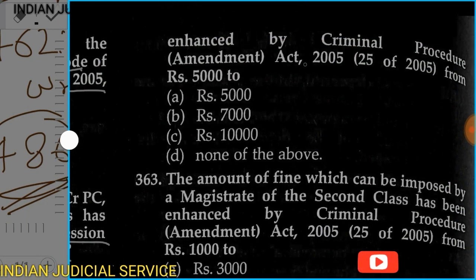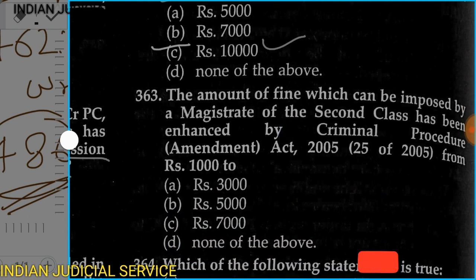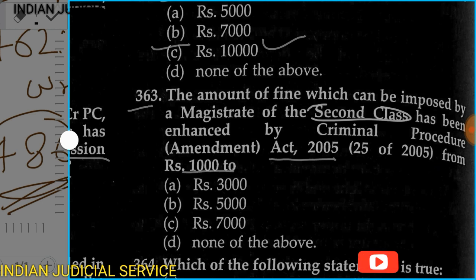The amount of fine for a first class magistrate was enhanced by the Criminal Procedure Amendment Act 2005 from rupees 5,000 to rupees 10,000. The amount of fine which can be imposed by a magistrate of second class has been enhanced by the Criminal Procedure Amendment Act 2005 from rupees 1,000 to rupees 5,000.